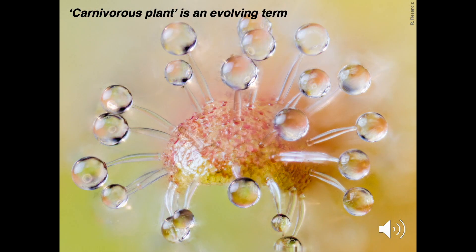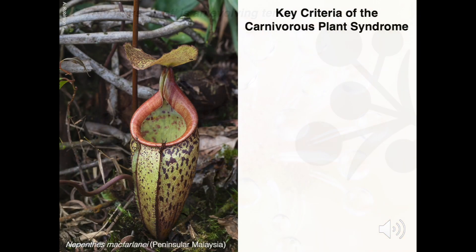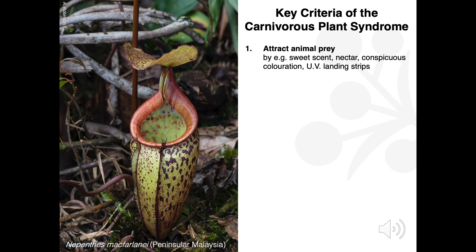So what exactly is a carnivorous plant? I say that this is an evolving term, because it used to be the case that plants were only considered carnivorous if they digested their own meals, but nature rarely cooperates with strict definitions, and our knowledge has come a long way since then. As a result, our definition has shifted to include the following syndrome of features. We consider a plant carnivorous if it can attract prey. This can be achieved through visual cues, like refraction of light, deceptive window panelling, or even UV patterns like those of flowers.